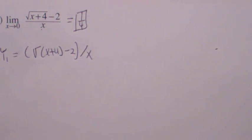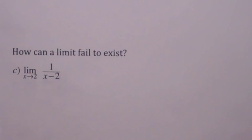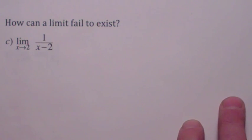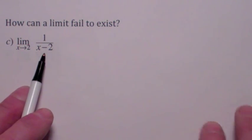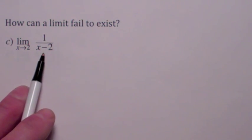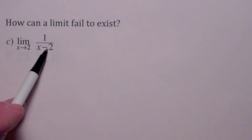All right, so a good question to ask is, how can a limit fail to exist? And it turns out, there's three main ways a limit can fail to exist. This first example, I hope you guys remember what this function looks like, 1 over x minus 2. Isn't it just 1 over x that's been shifted which way? To the left or to the right? It's been shifted to the right two units, right? And then what we have is a vertical asymptote.